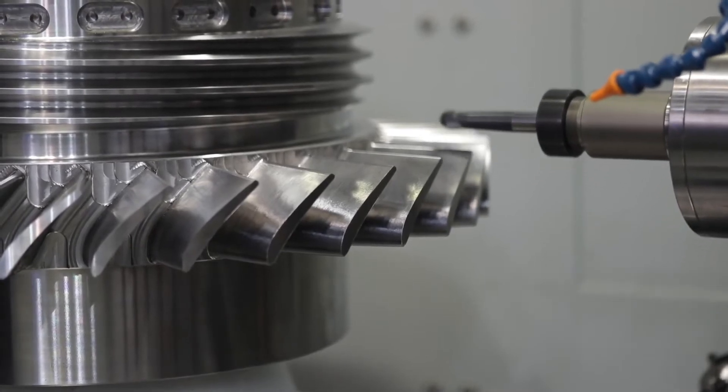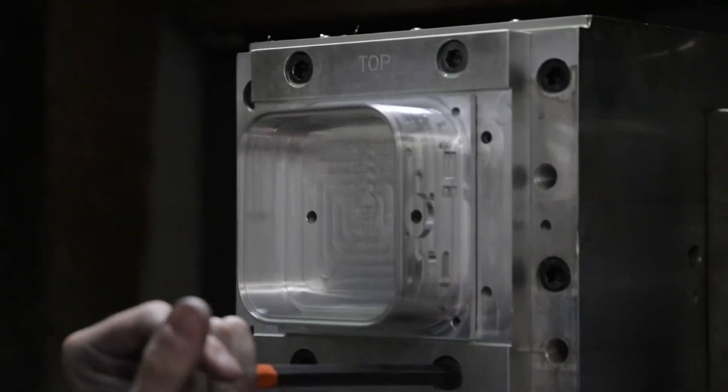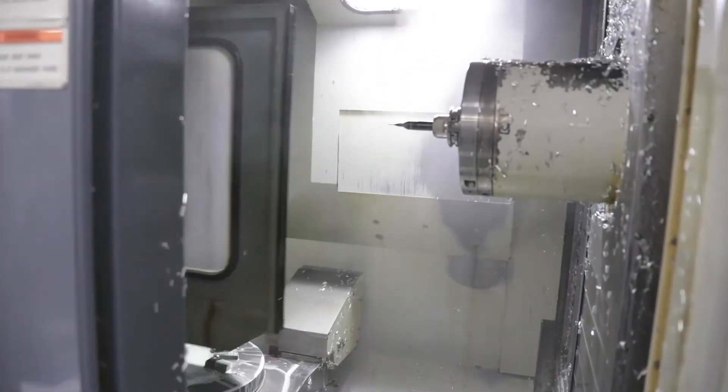For example, an aerospace part and test fixture are both manufacturable, but the aerospace part is much more complex and therefore has a longer lead time and higher cost.